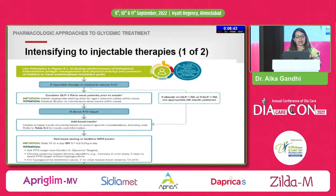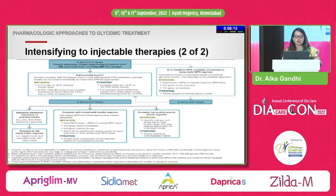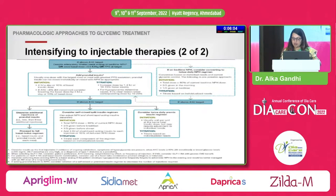If the patient is not controlled on OADs and you decide to start an injectable, the first injectable therapy should be a GLP-1 receptor agonist prior to insulin, if the patient is not already on GLP-1 or DPP-4 inhibitor. If still above target, start basal insulin once a day, then titrate. If not controlled, add prandial insulin, use a split-mix or pre-mix regimen, then intensify to basal-bolus therapy.